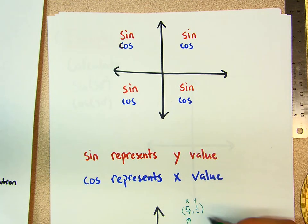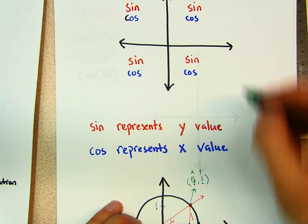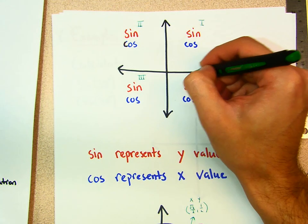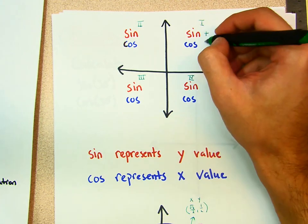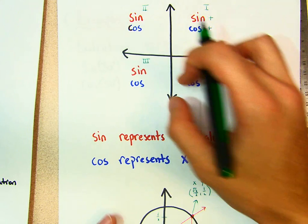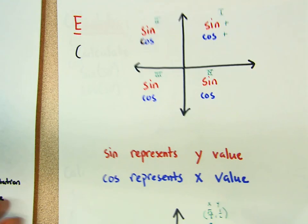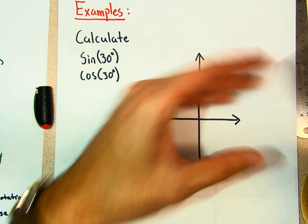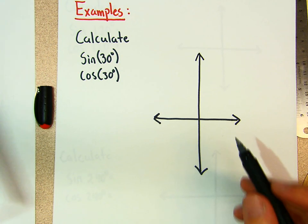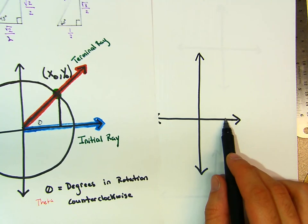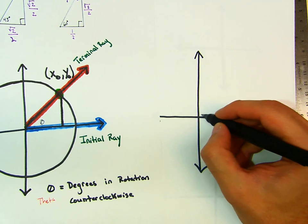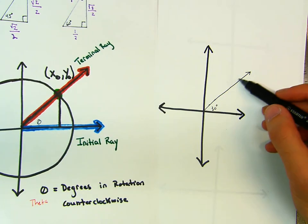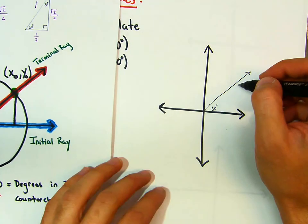Let's note the signs by quadrant. In Quadrant 1, sine is positive and cosine is positive. We'll come back to this once we do some examples. To find sine of 30 degrees: we start at the initial ray and rotate 30 degrees to get our terminal ray, with the unit circle present.